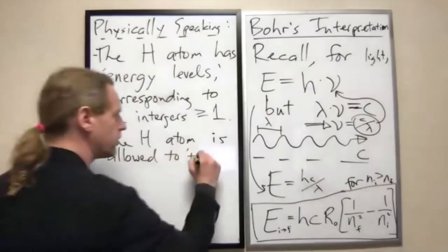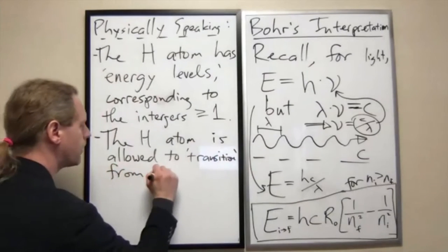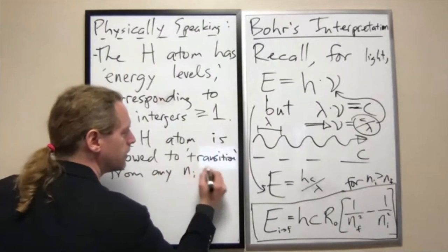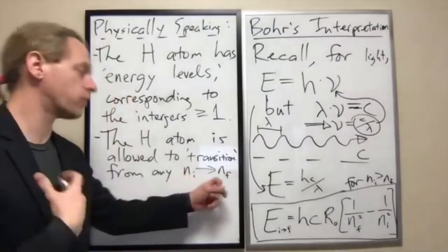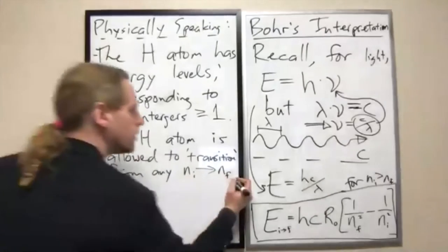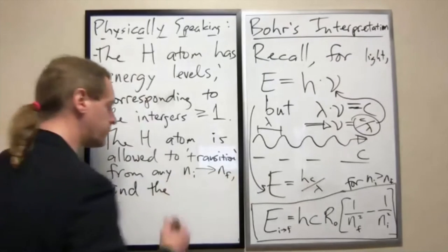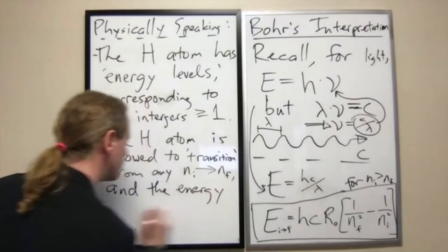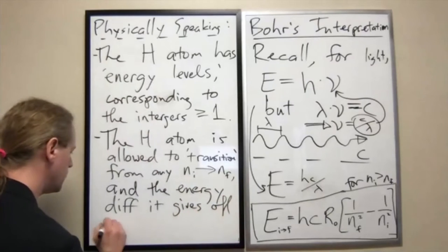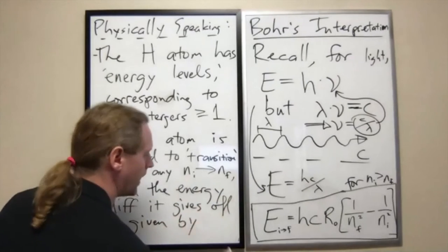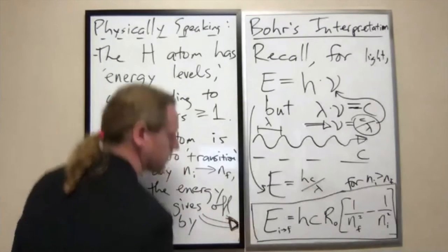It's allowed to transition from any NI to NF, where it's understood that NI is greater than NF. And the energy it gives off, or the energy difference, is given by that formula right there.